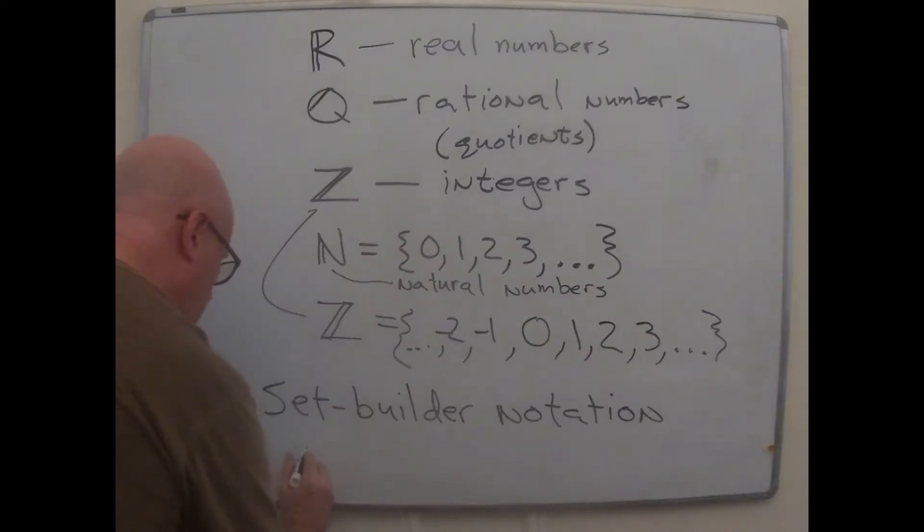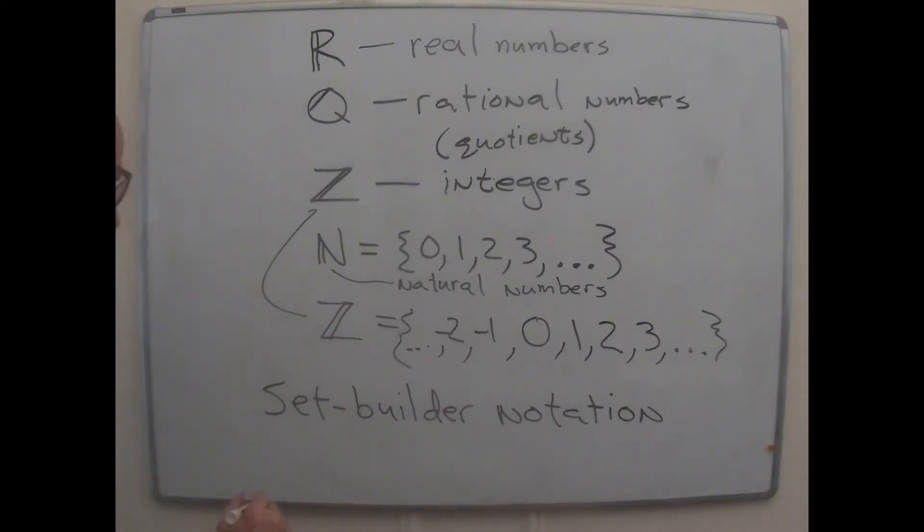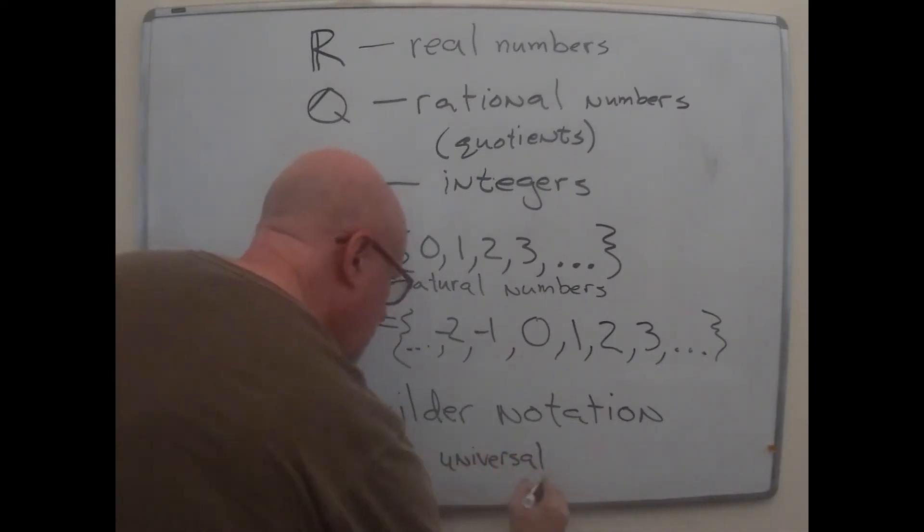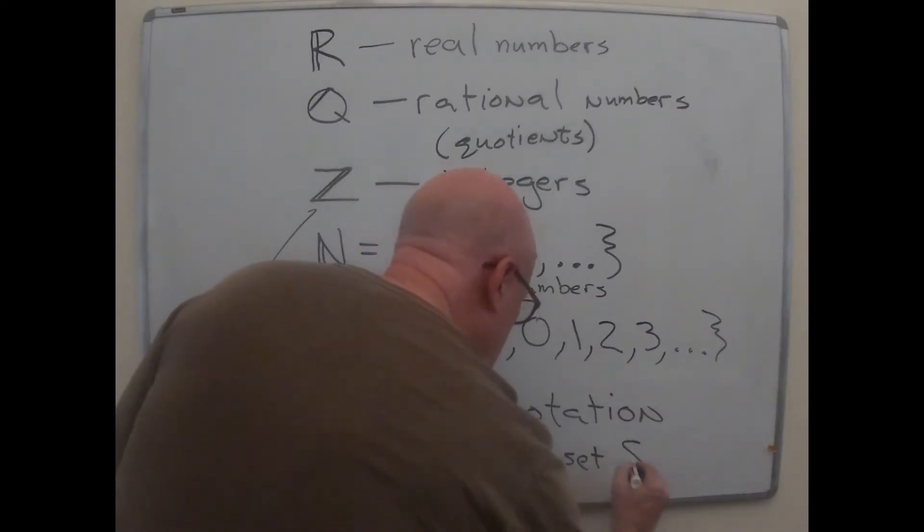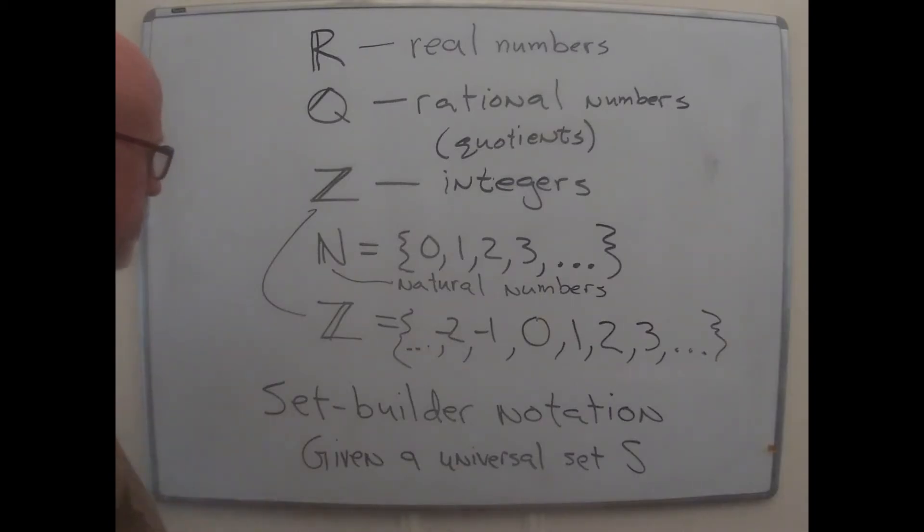So, you'll start with, in doing set builder notation, you have to specify ahead of time kind of a realm that you're working in. And we call it the universal set. So, we'll start with a universal set. And, you know, for instance, that could be any one of these things. We just kind of pointed at Z twice just now. N, Z, Q, or R could be your universal set, but it could be other things. So, you know, it's sort of up to you. We're trying to be generic right now.